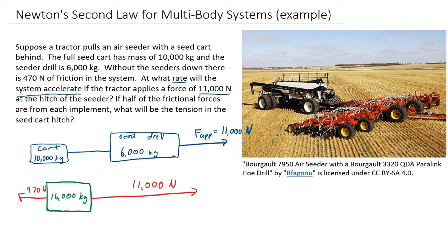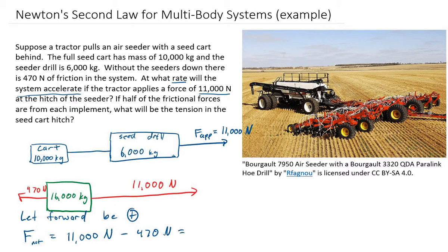Let's find the net force acting on our system. To be rigorous, I'll define forward as the positive direction. The net force equals 11,000 newtons in the positive direction minus 470 newtons of friction in the opposite direction, leaving us with 10,530 newtons in the positive direction.